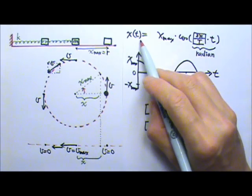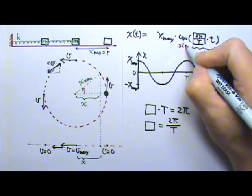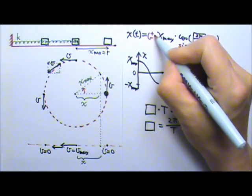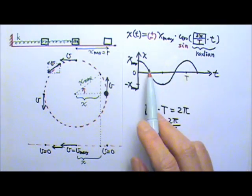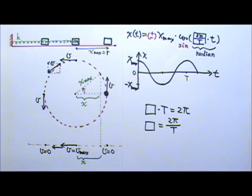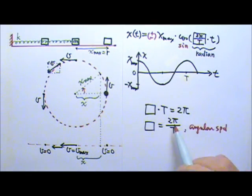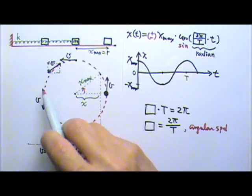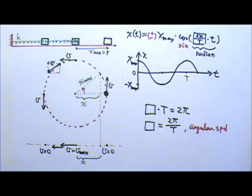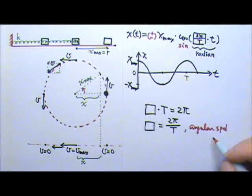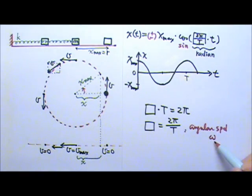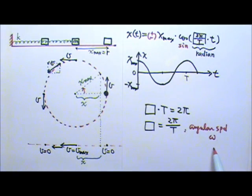So our position as a function of time doesn't have to be a cosine function. It can also be a sine function, and it can be positive or negative cosine or sine. Of course it can also be anything in between, but you don't have to worry about that in this course. By the way, this quantity — 2π divided by the period — is the angular speed, because it's the total angle traveled in one circle divided by the total time for that circle. We call this angular speed omega, written with the Greek letter ω.